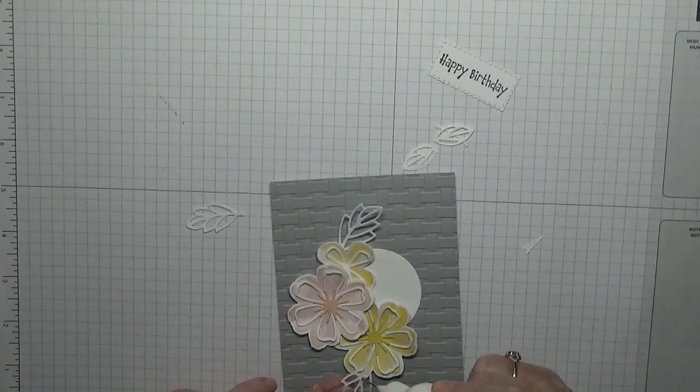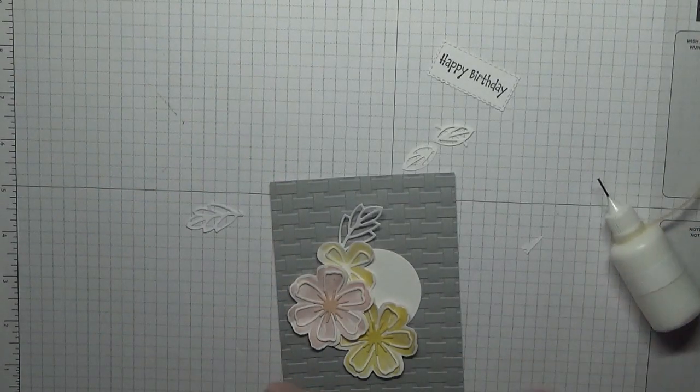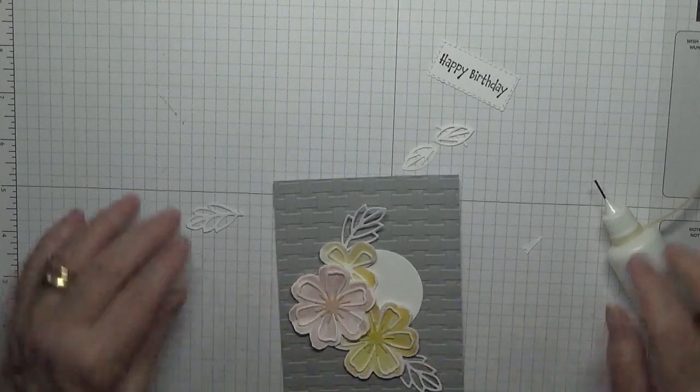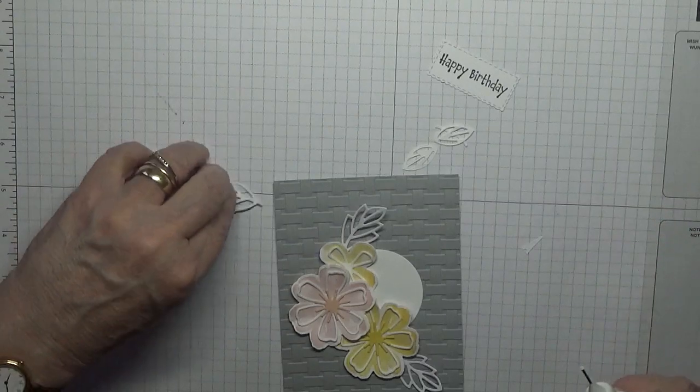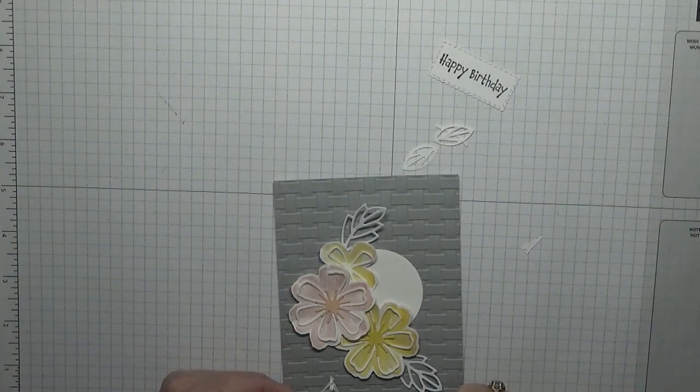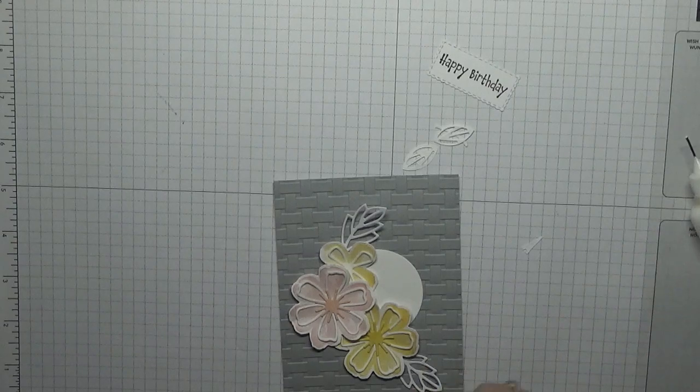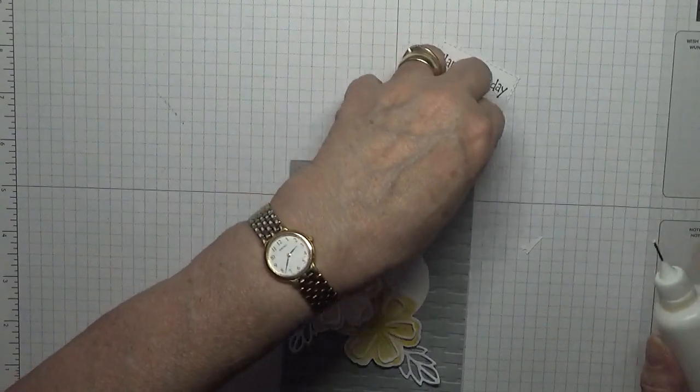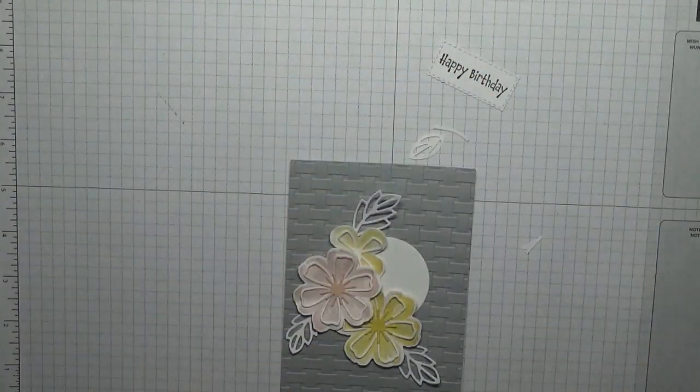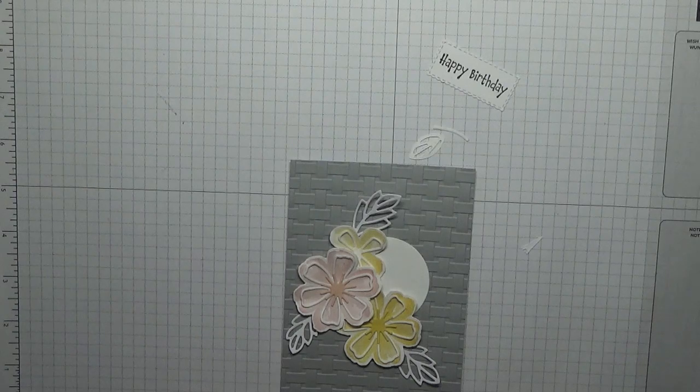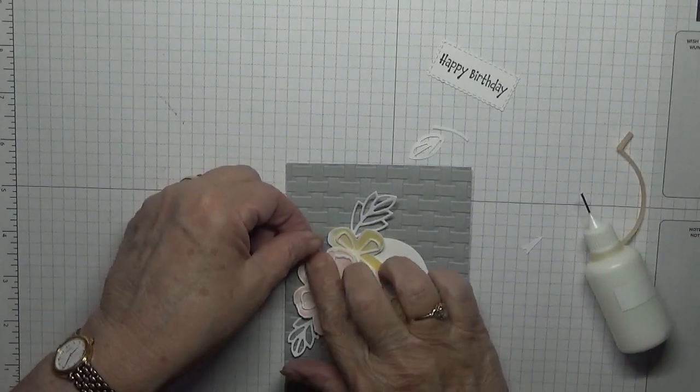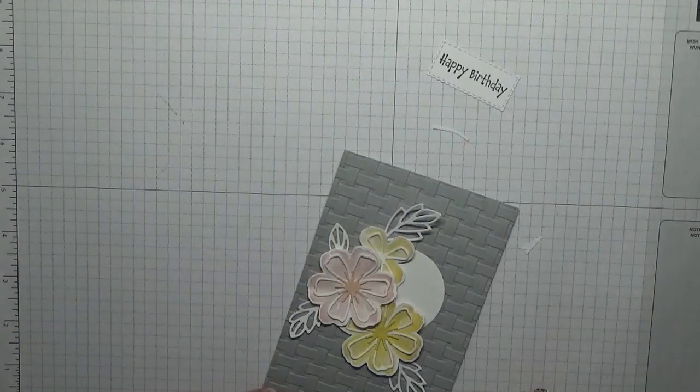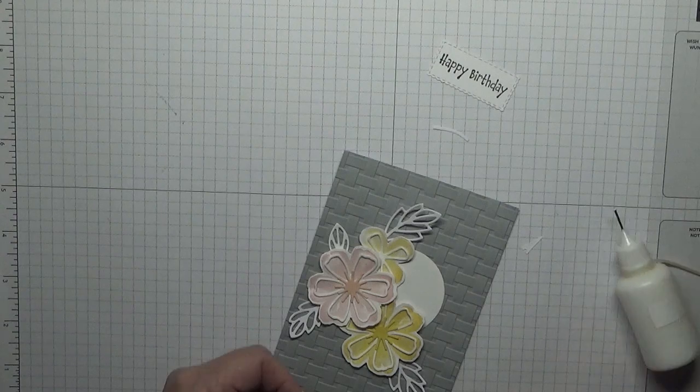Then the pink flower I'm going to place there. One of the leaves we cut off, we're going to place under there, and then the third leaf we're going to place under there. Then these two tiny leaves—one up here and one here.